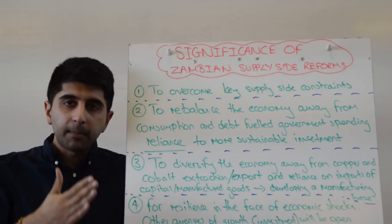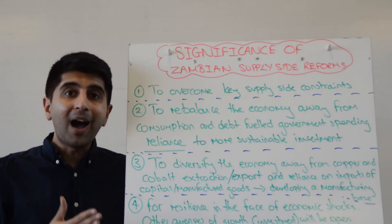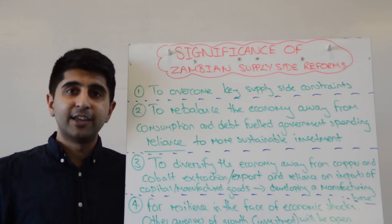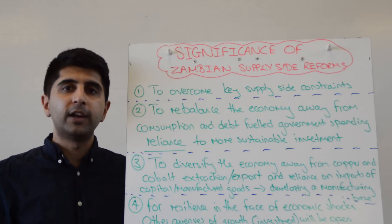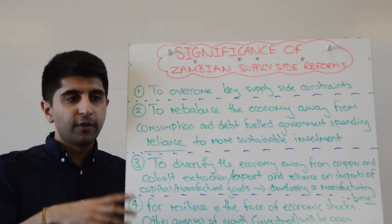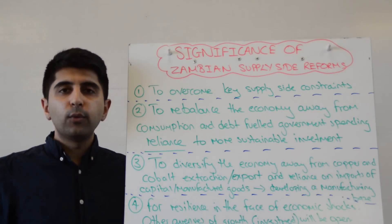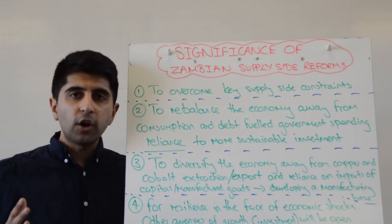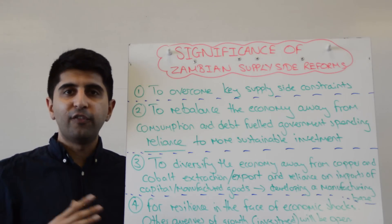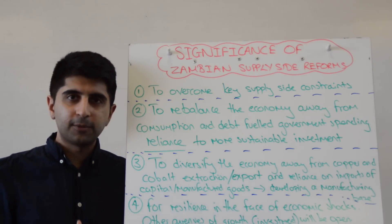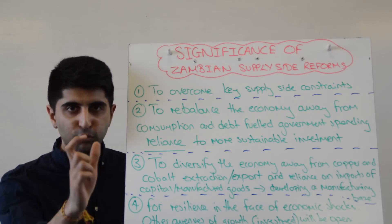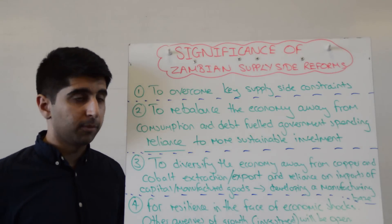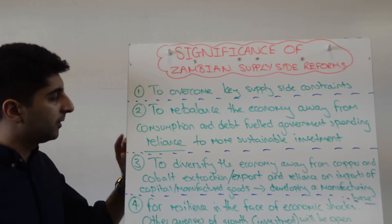To open up investment — I in the AD equation — so if either one of the other two components are shocked and we see a fall, you've got investment to keep growth going in Zambia. So for rebalancing the economy, very important.